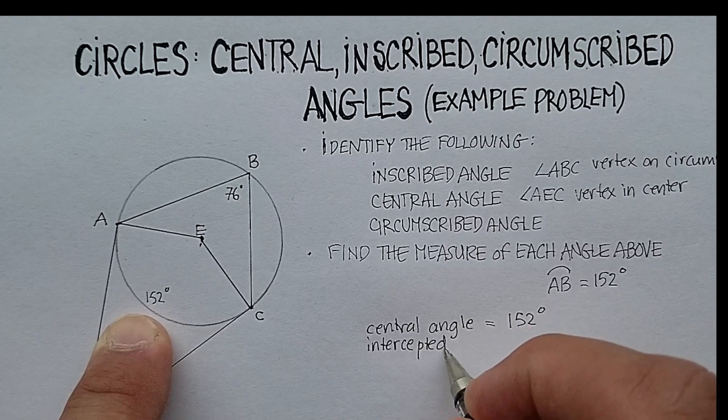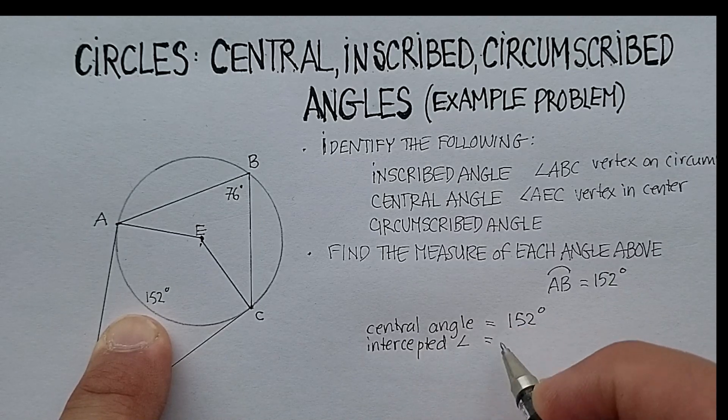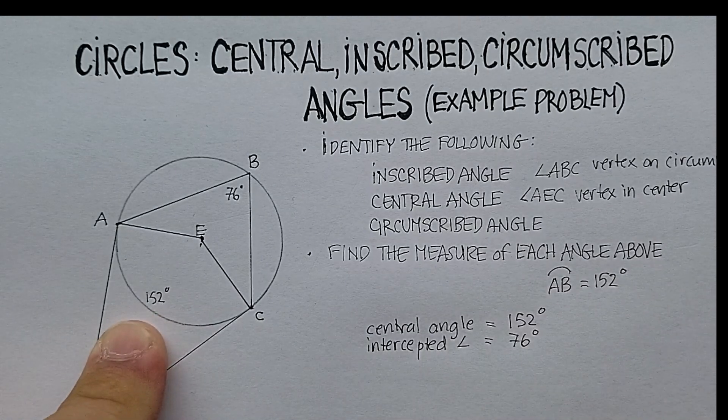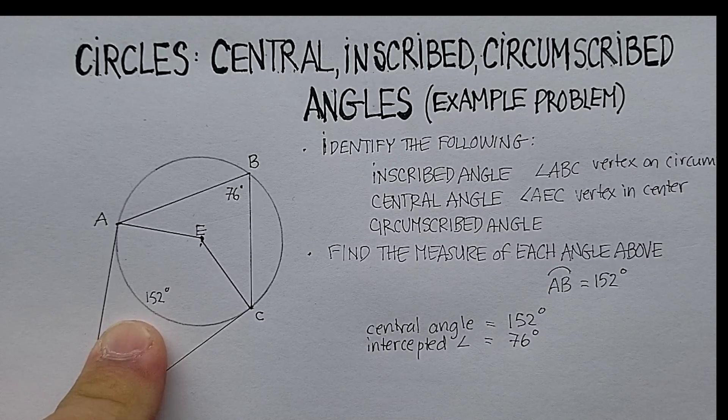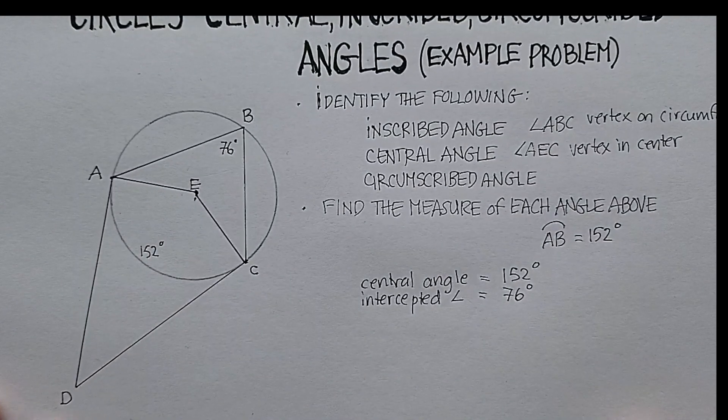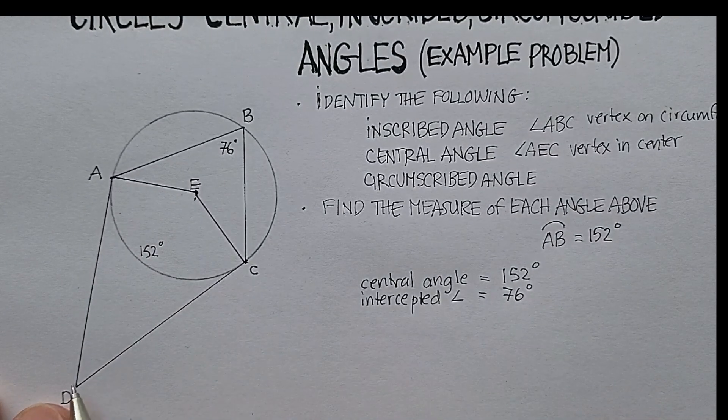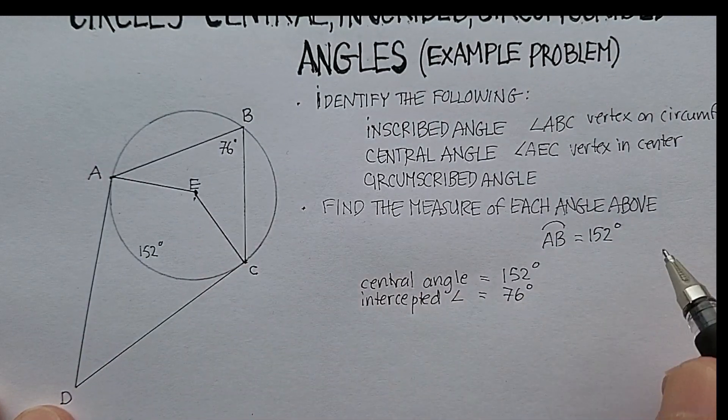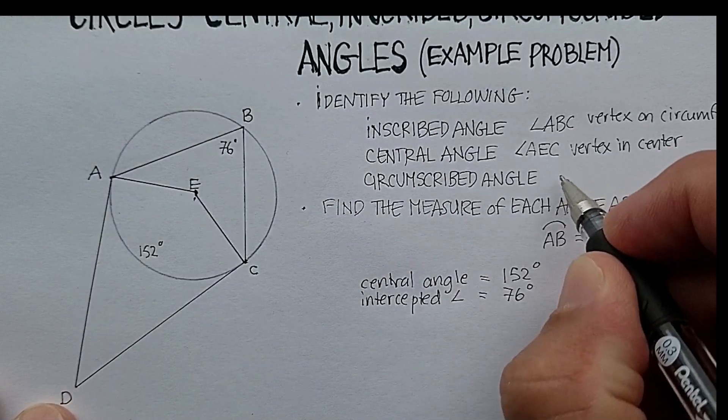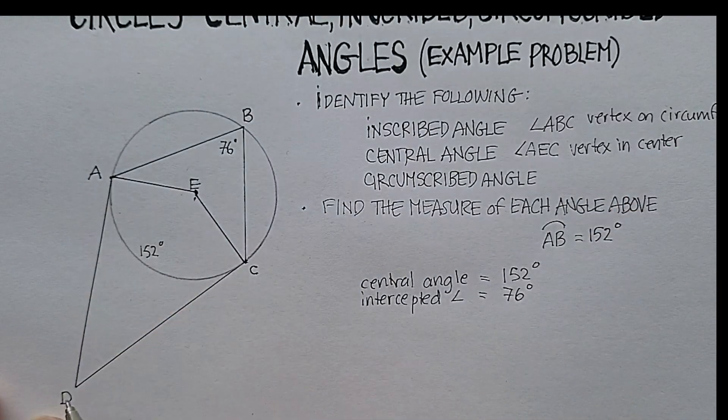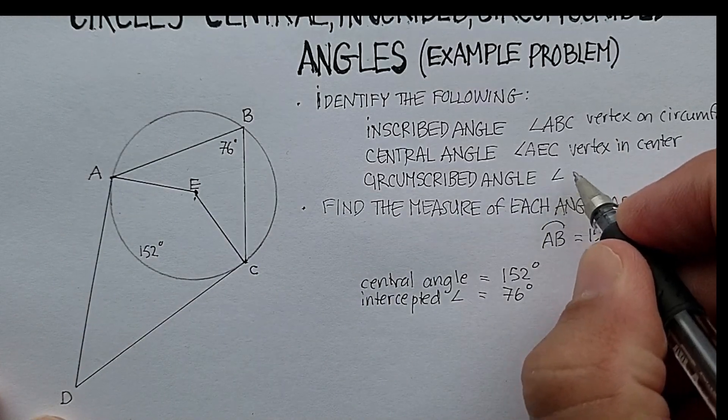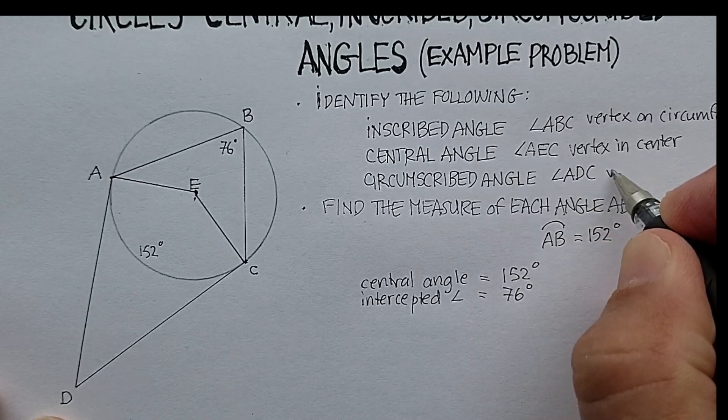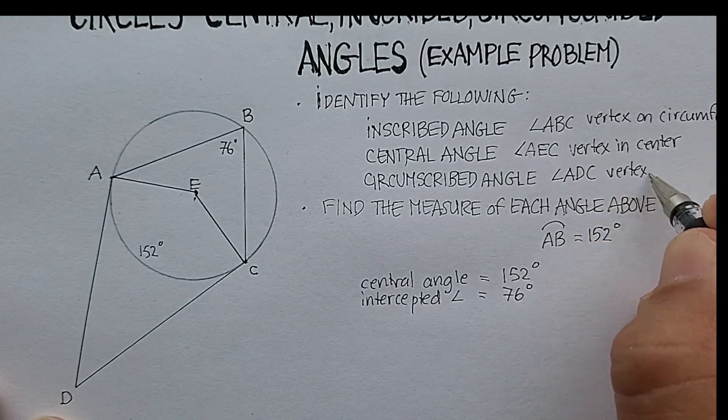Intercepted angle equals 76, because that was actually given to us. So the only one that we really have to find now is the circumscribed angle. Now remember, the circumscribed angle, the vertex is outside the circle. Okay, so vertex, actually let me just go ahead and identify it first, would be angle ADC, vertex outside.